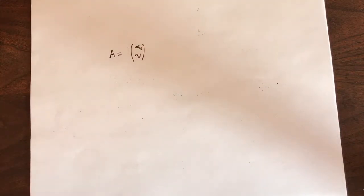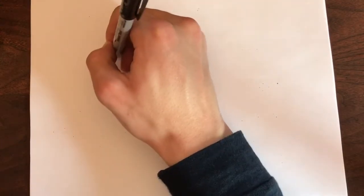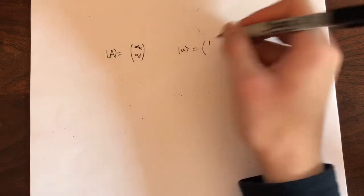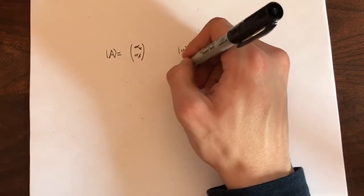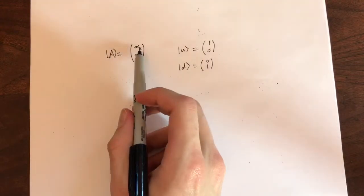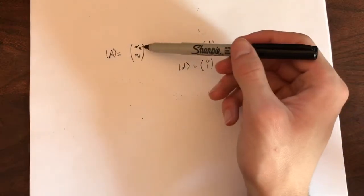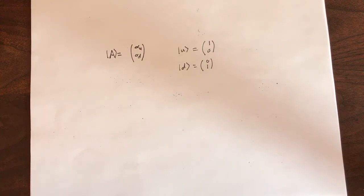As such, the up vector would look like this. It would have a component of 1 along the up axis and 0 on the down axis. And the down vector would look like this, the opposite way. So, whatever the number is for these components, when you want to represent a ket vector in matrix form, you just plug them in in their respective places. Thus, any ket vector that represents spin can be represented by a vertical matrix with two entries.